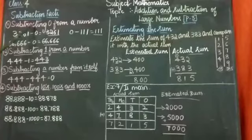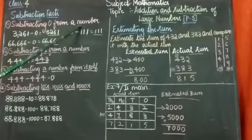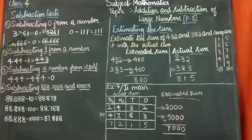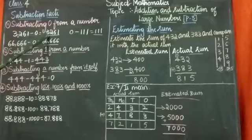The first fact is subtracting 0 from a number. Here we have 4 digit numbers, 3 digit numbers, 6 digit numbers. When we subtract 0 from a number, we get the same number. If we subtract 0 from any number, the answer is the number itself.